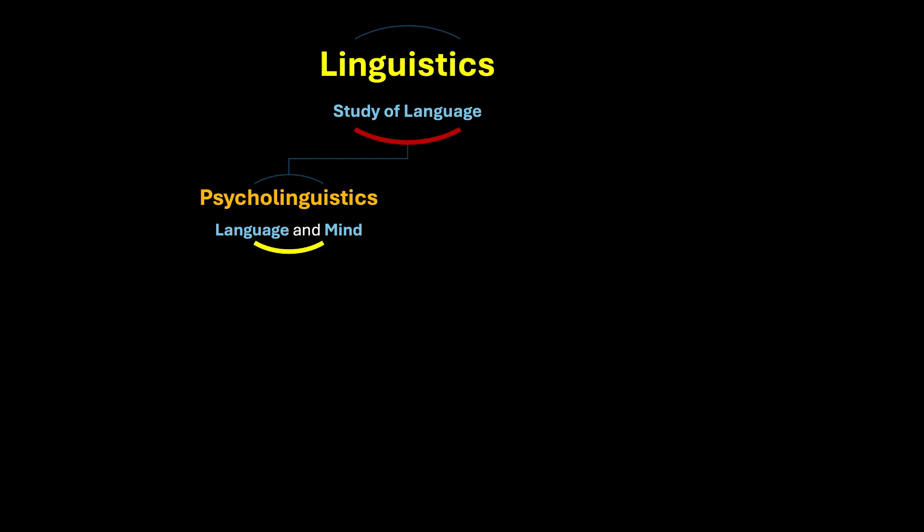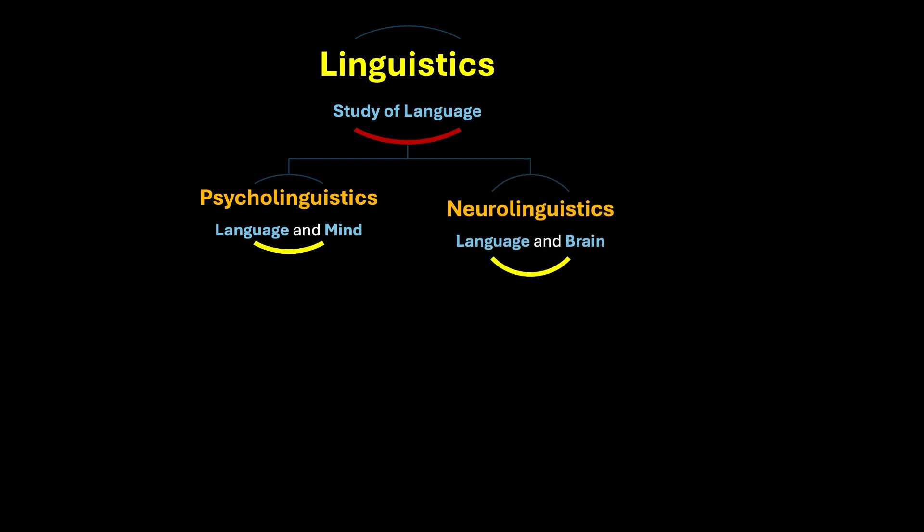Linguistics refers to the scientific study of language. It has an interdisciplinary branch called psycholinguistics, which deals with the relationship between language and mind. Psycholinguistics has a sub-branch called dyslexia, which refers to reading disability. Another interdisciplinary branch is neurolinguistics, which deals with language and the brain.